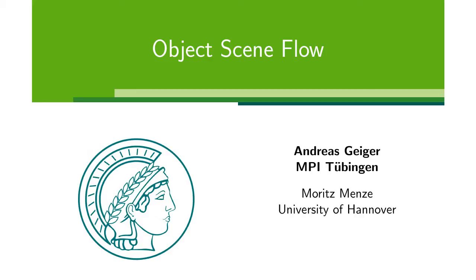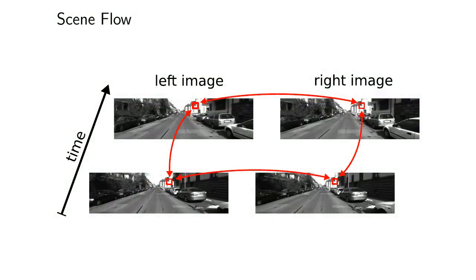In this work, we propose a novel model for 3D scene flow estimation. 3D scene flow refers to the dense three-dimensional vector field describing the motion of each point on every surface in the scene.